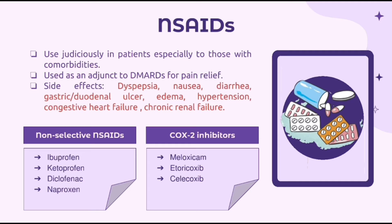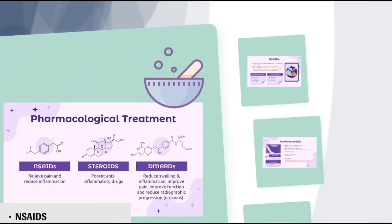There are two types of NSAIDs: non-selective NSAIDs and COX-II inhibitors. Examples of non-selective NSAIDs include ibuprofen, ketoprofen, diclofenac, and naproxen. COX-II inhibitors include meloxicam, etoricoxib, and celecoxib.